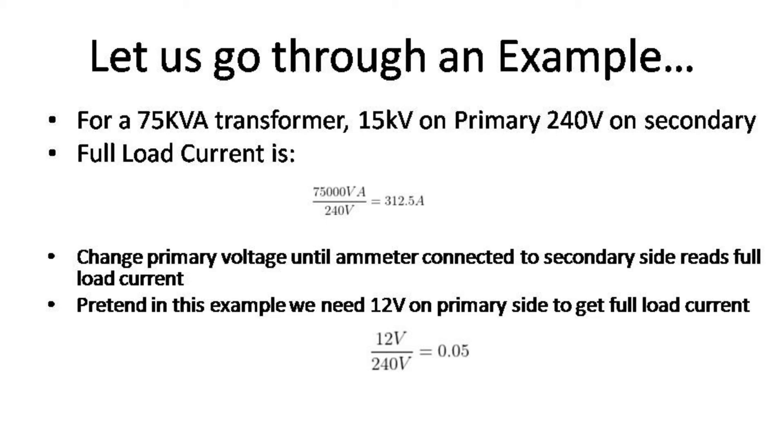In this particular example, let us just pretend that we get our full load current when we inject 12 volts into the primary side of the transformer. Then the impedance ratio is equal to 12 divided by 240 volts, which equals 0.05.